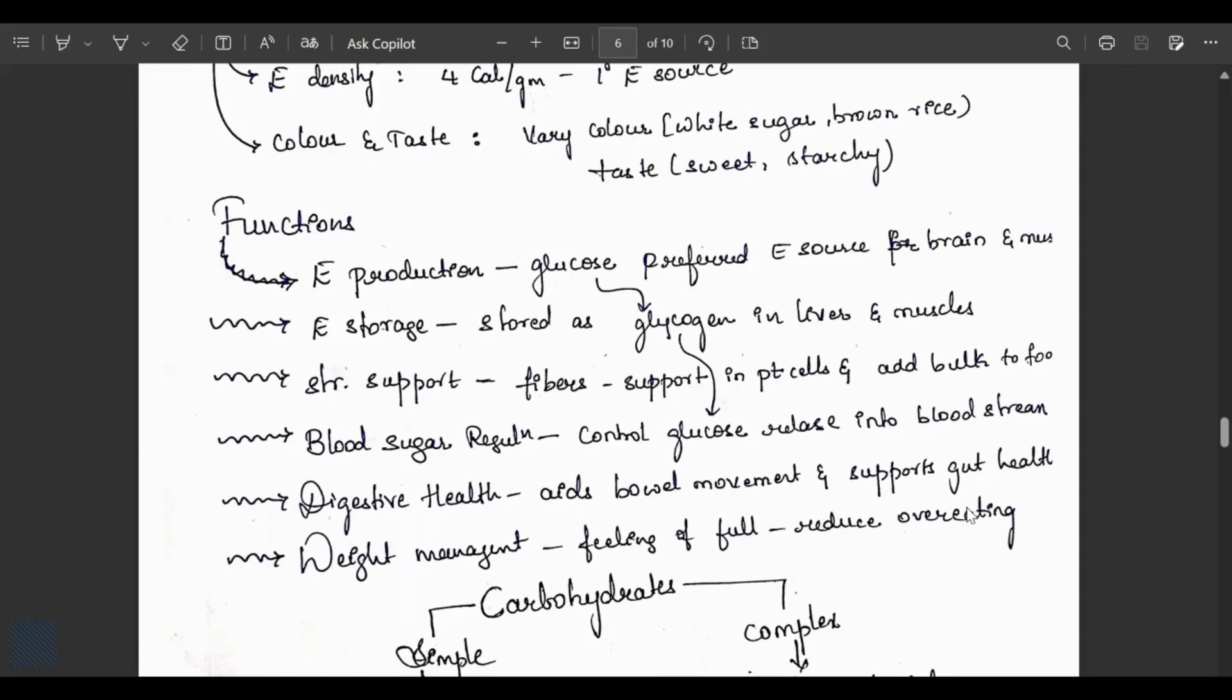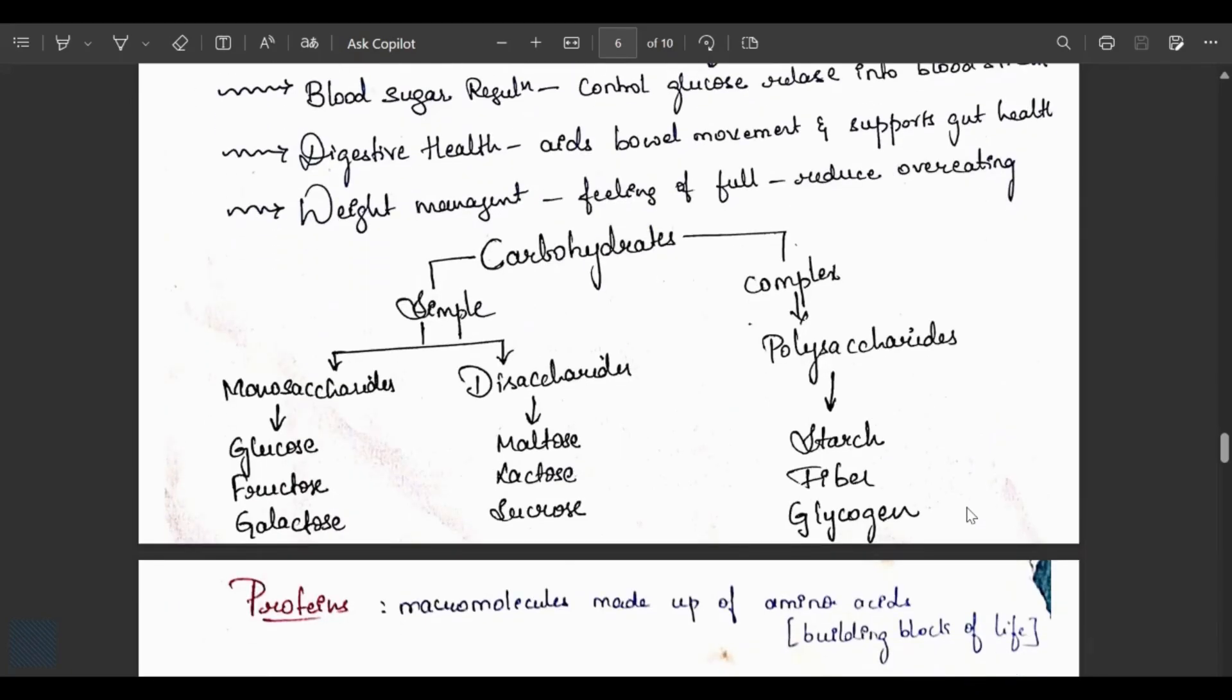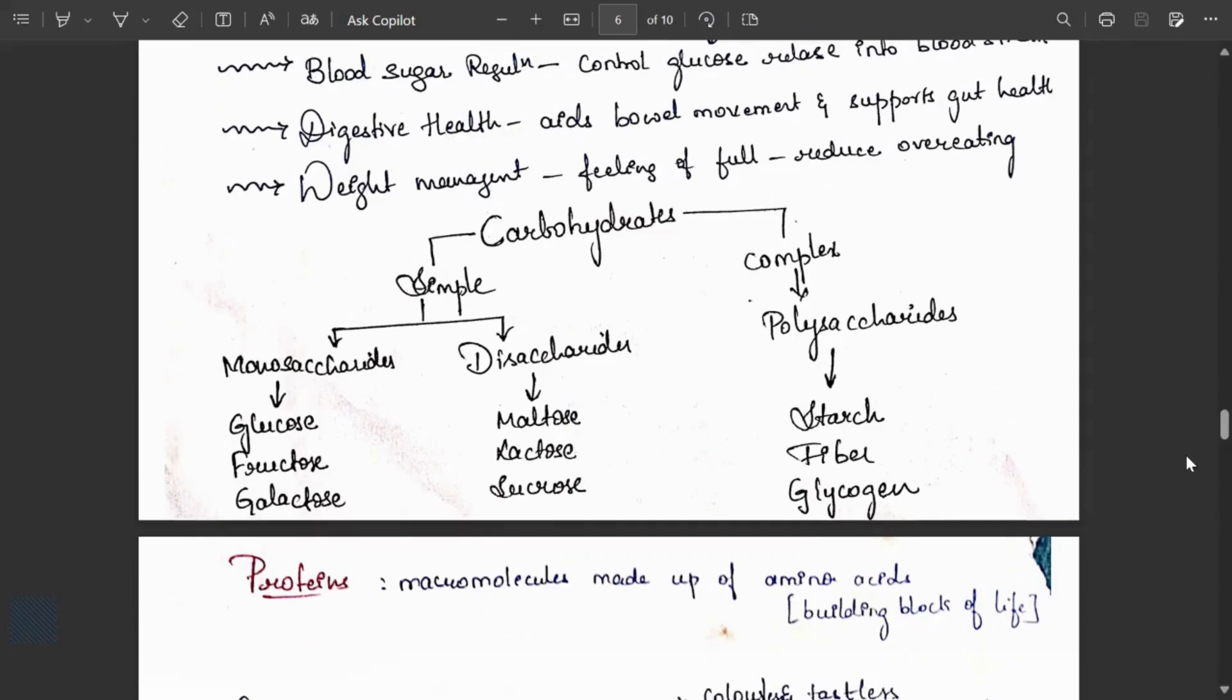Functions: primary energy source for brain and muscles. Energy storage as glycogen in liver and muscles. Structure and support: fibers help support in plant cells and add bulk to food. Blood sugar regulation controls glucose released into bloodstream. Digestive health aids in bowel movement and supports gut health. Weight management: feeling of fullness reduces overeating. Carbohydrates have two types: simple and complex. Complex carbohydrates are polysaccharides including starch, fiber and glycogen.